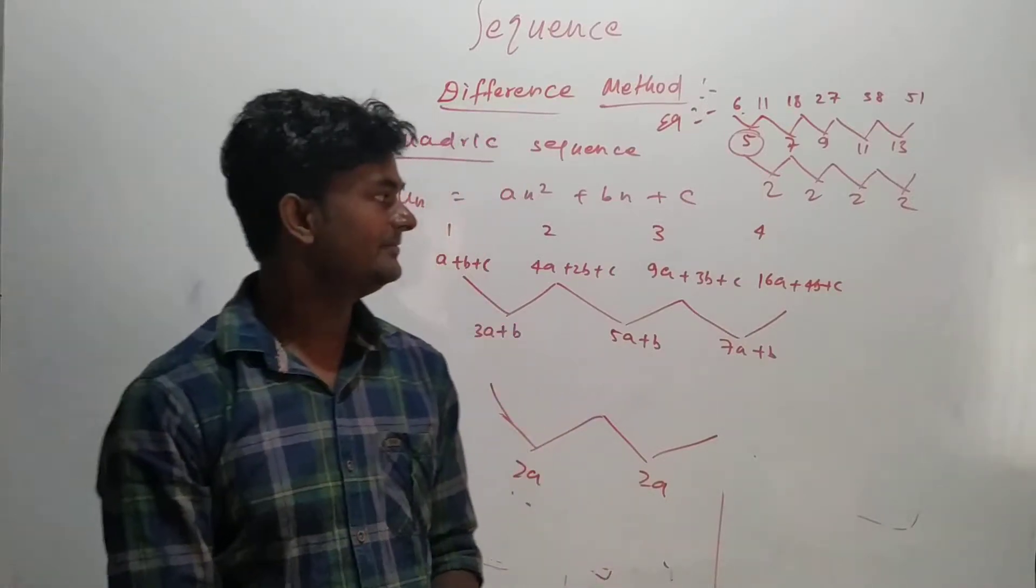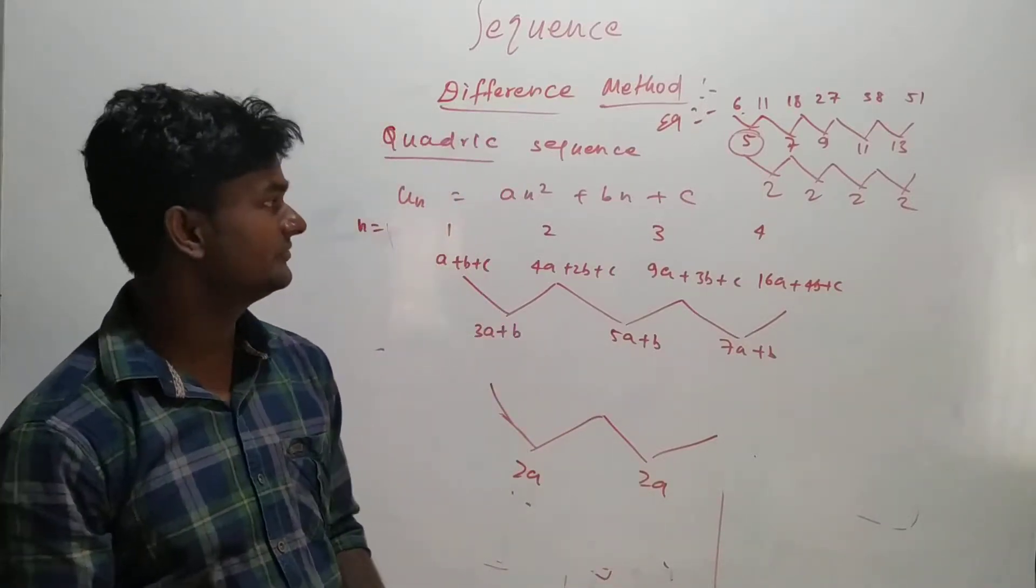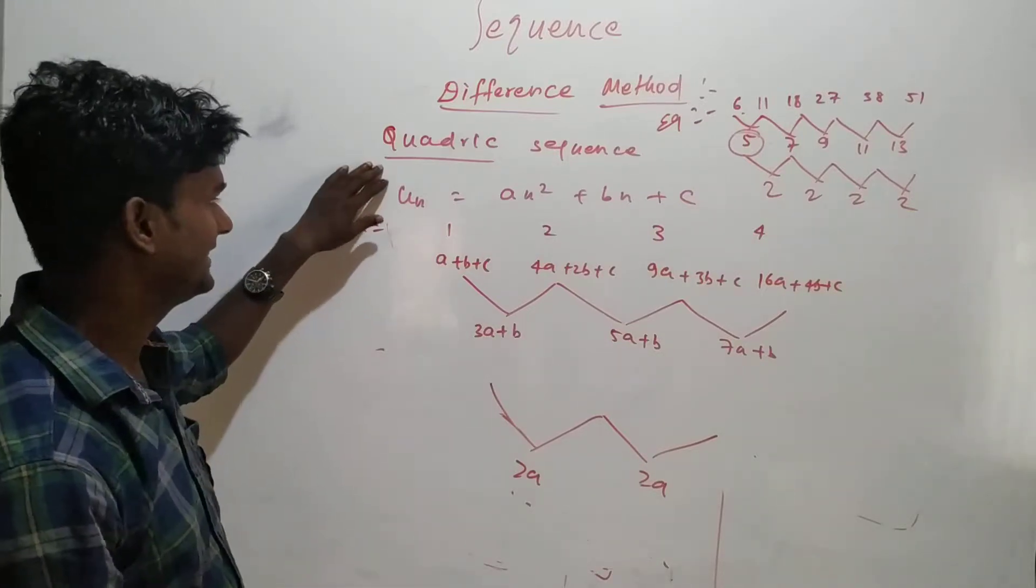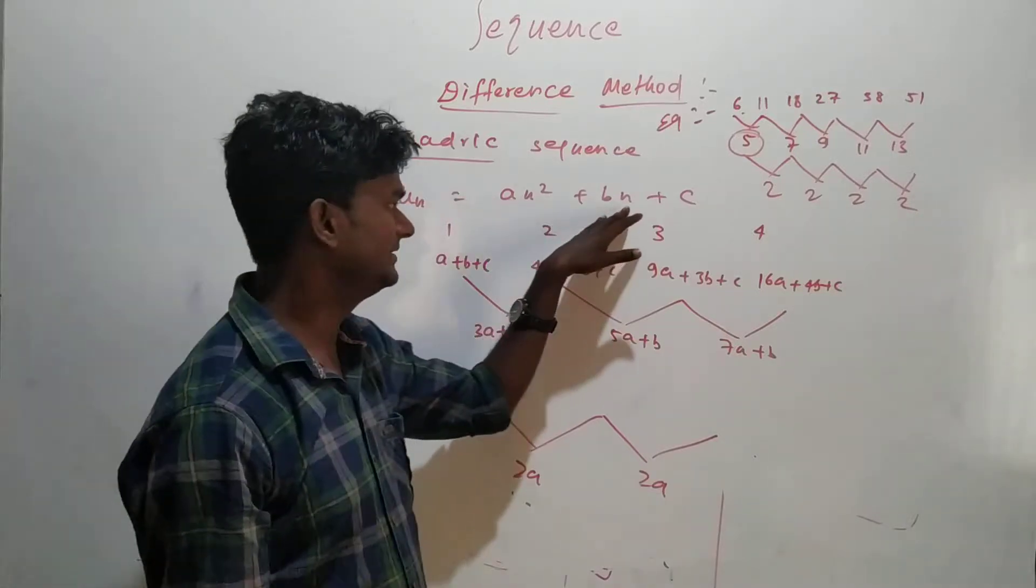Hi, in the last video we have discussed about arithmetic sequence and in this video we are going to discuss quadratic sequence. So for quadratic sequence I have taken u_n equal to n square plus b n plus c.